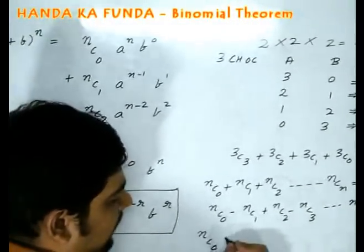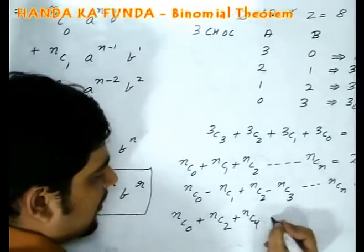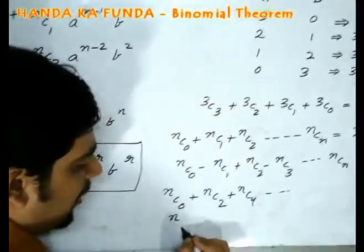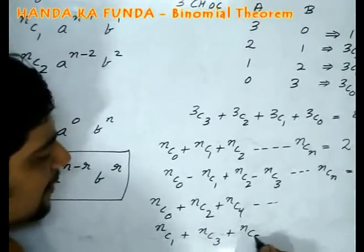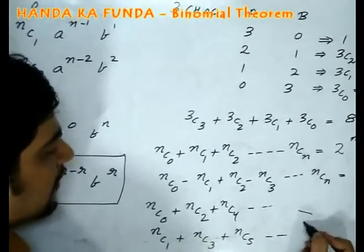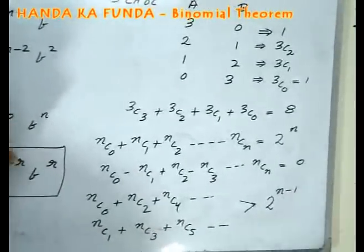If I am selecting just the even number of terms that is nC0 plus nC2 plus nC4 that will be equal to if I am selecting just the odd number of terms nC1 plus nC3 plus nC5 and so on. Both of them will be equal to 2 to the power of n minus 1.